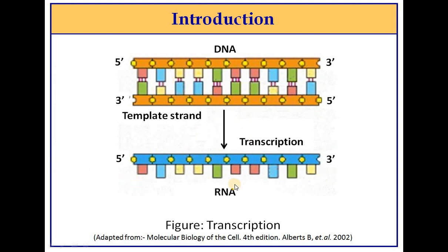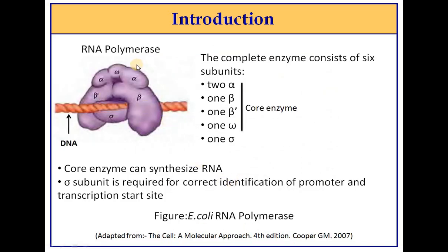In prokaryotes, all of these RNA molecules are synthesized by an enzyme called RNA polymerase. If we talk about RNA polymerase in prokaryotes, it has 6 subunits: 2 alpha, 1 beta, 1 beta dash, 1 omega, and 1 sigma.